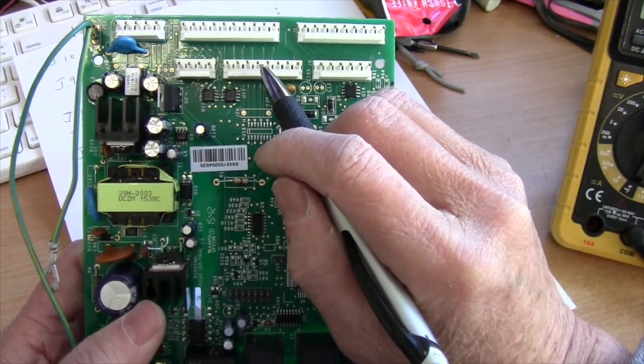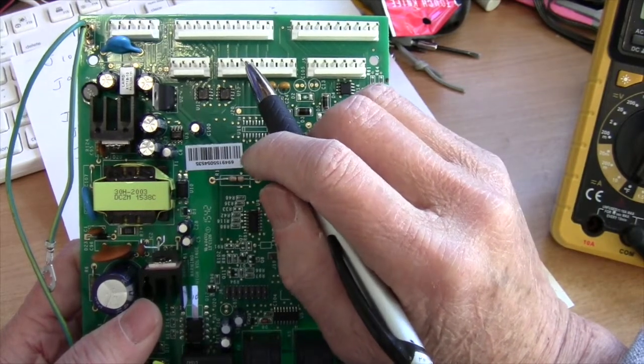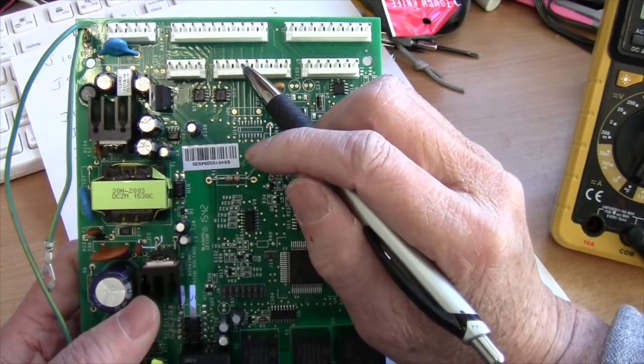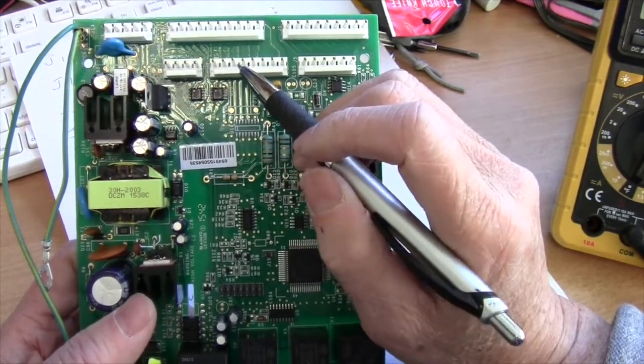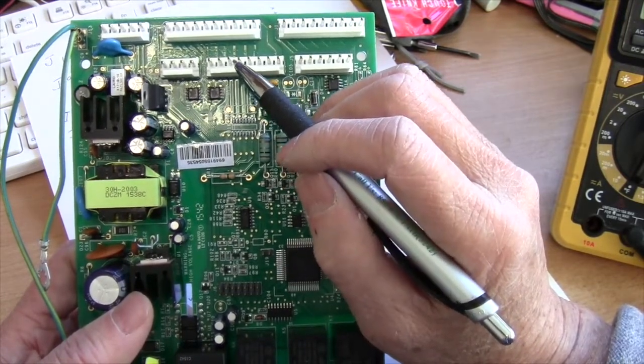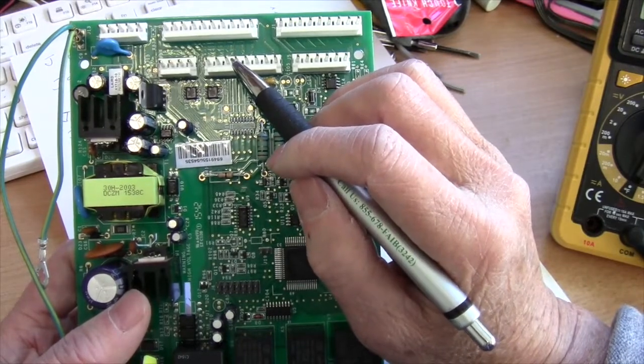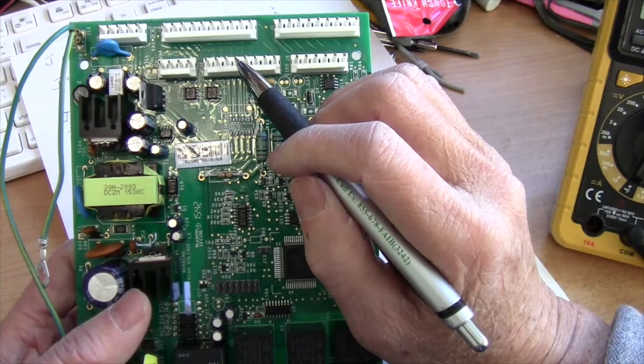That's the evaporator fan. You should get between eight to 12 volts. And sometimes you might get four to 12 volts depending on your refrigerator. I think mine just has two speed or like a variable speed. So pin three and four, eight to 12 volts.